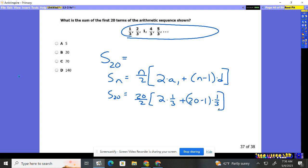Pretty interesting. So our a1 value is one-third and is going up by one-third. So our a1 and our d are the same thing. n is 20 in this case.